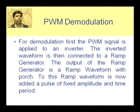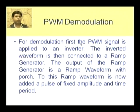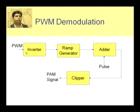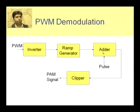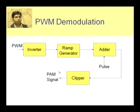Now we come to demodulation of PWM. For demodulation, the PWM signal is first applied to an inverter, then to a ramp generator, then a pulse is added to this signal and we apply a clipper to obtain a PAM signal.